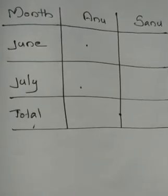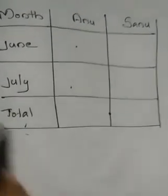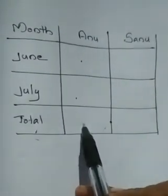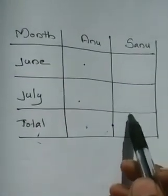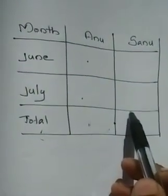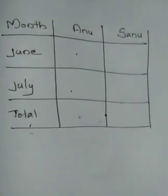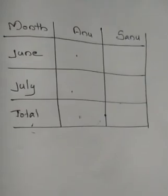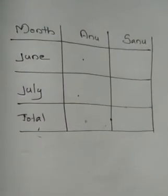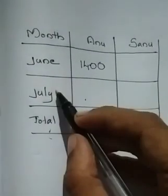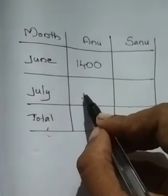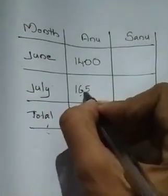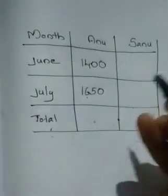Listen here. I will arrange the given details in a table. Here we write Anu's deposits and here we write Sanu's deposits. How much is the deposit of Anu in the month of June? That is Rs. 1,400. How much in July? Anu's deposit is Rs. 1,650.